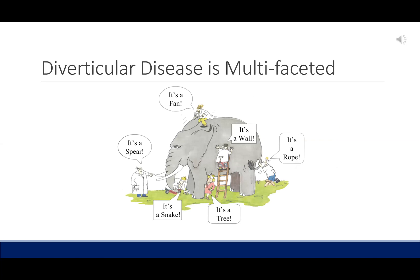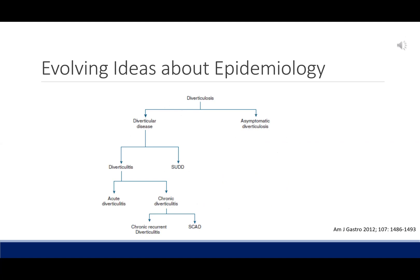Diverticular disease is multifaceted — similar to blindfolded people feeling an elephant, we can focus on different facets of this condition at a time. Our understanding is evolving. We often think of diverticulitis as discrete, abrupt, and acute attacks. However, for some patients this may not be true. Some may have chronic abdominal pain beyond flares and may also have IBS symptoms. SUD — symptomatic uncomplicated diverticular disease in the absence of macroscopic inflammation — and SCAD — segmental colitis associated with diverticulosis — can be two of these entities.